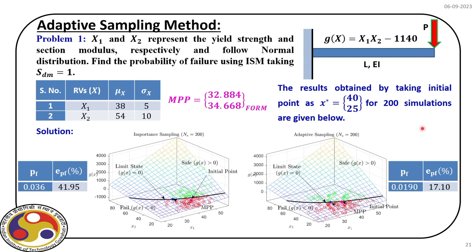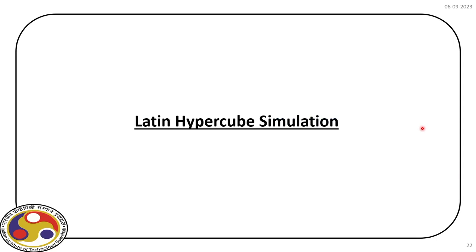This shows how we can incorporate importance sampling and its adaptive version for reliability analysis. Once we estimate probability of failure, we find beta using inverse transformation since p_f = Φ(-β). This covers the variance reduction technique using importance sampling and adaptive sampling as in our syllabus. Before closing, let us briefly discuss other simulation techniques that can effectively solve reliability problems.